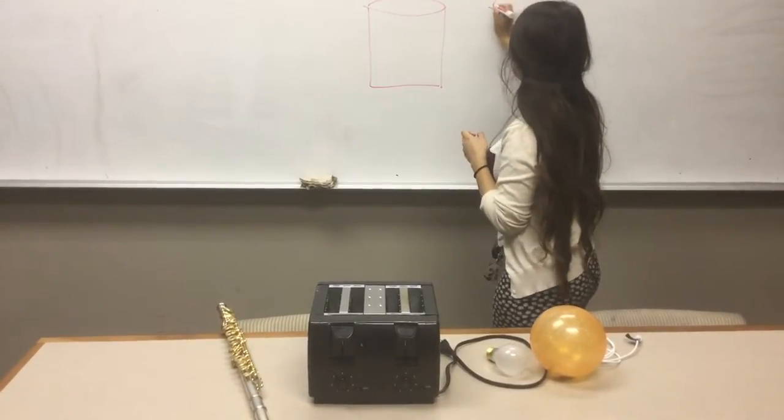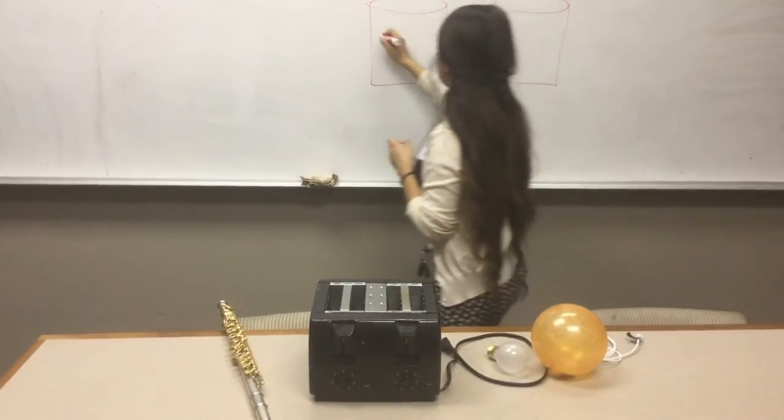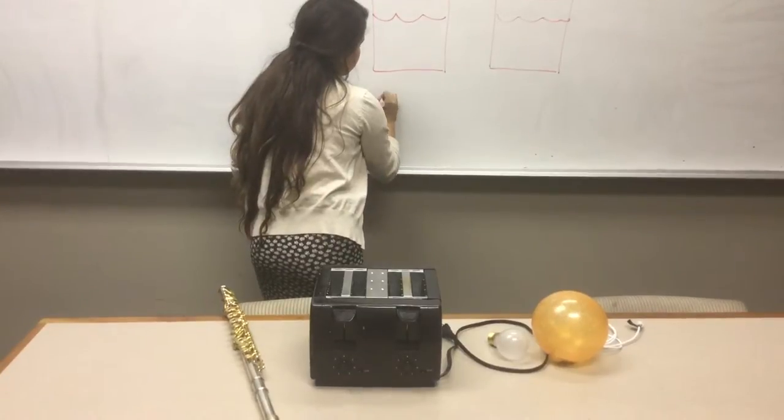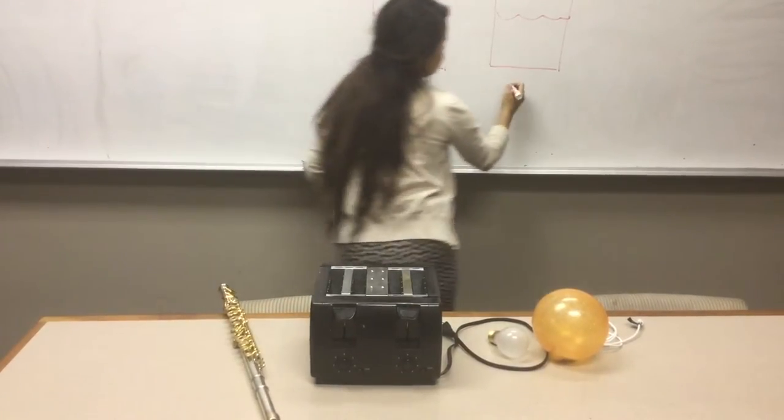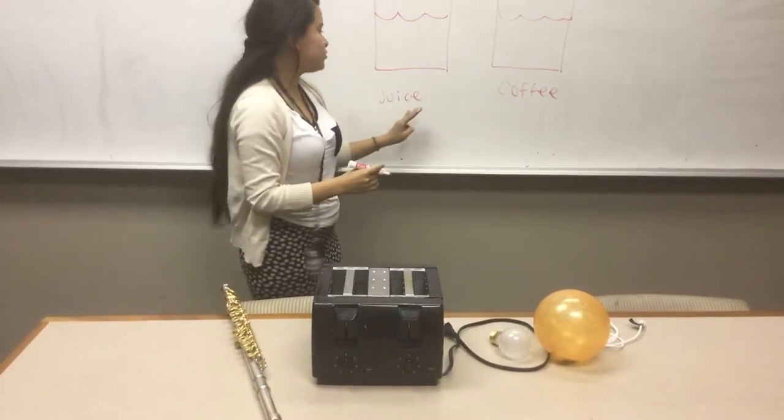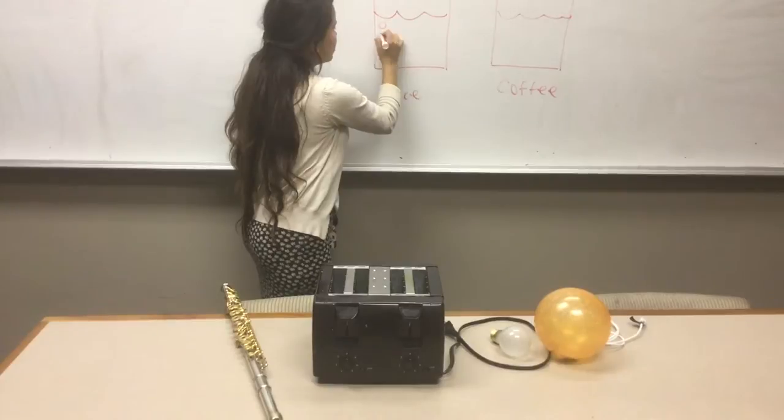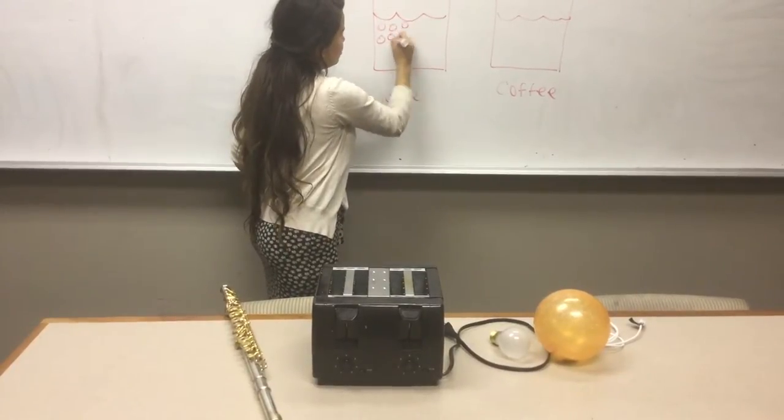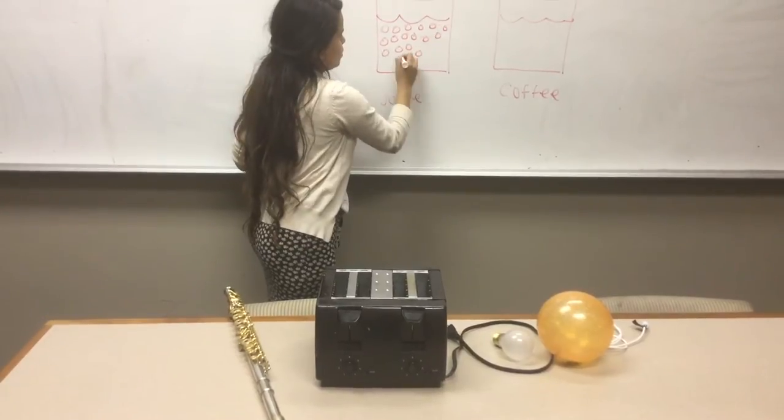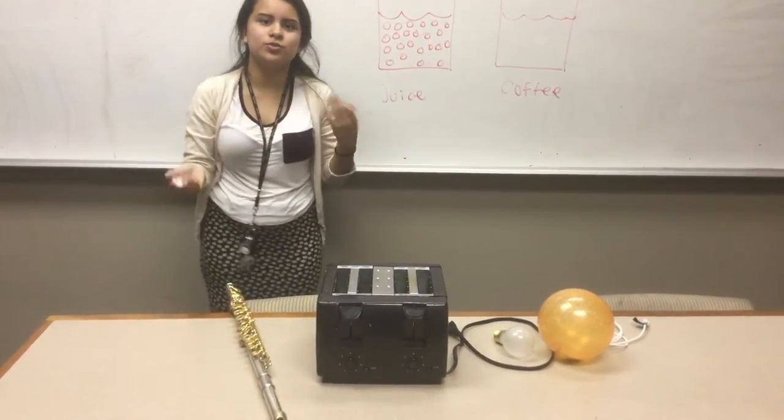I'm going to draw two containers. Okay. They're both going to have liquid inside. So this one's going to be juice and this one coffee. So we have juice and coffee. When we have juice, the particles, the atoms, they're not moving very quickly because the juice is cold.